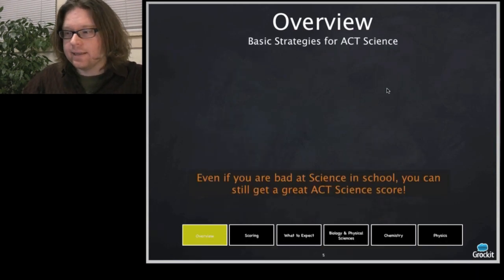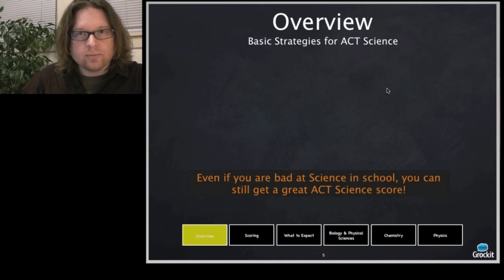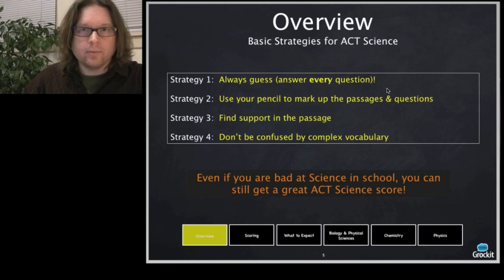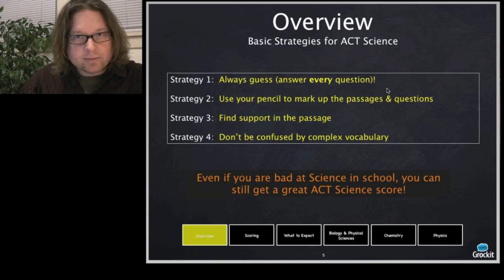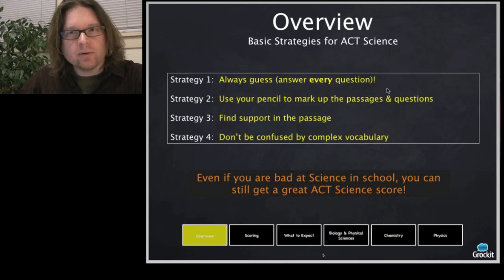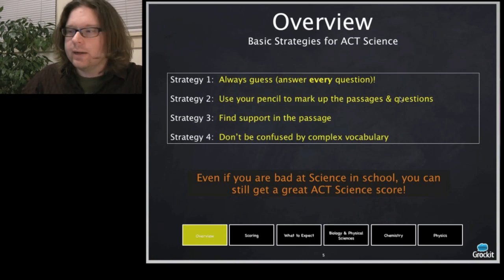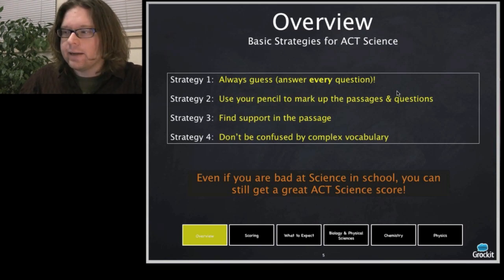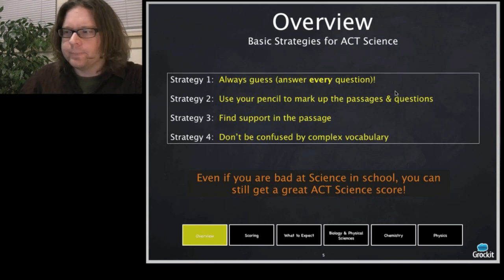Basic strategies for ACT Science. Even if you're bad at science, you can still do well — you should expect that. If you're following along and paying attention, you don't have to be a science whiz. Strategy one: always guess on every question. Strategy two: use your pencil to mark up the passage — you get a booklet and a pencil, you may as well use them. Mark off key words and trends in the graphs. Strategy three: find support in the passage. Strategy four: don't be confused by complex vocabulary.